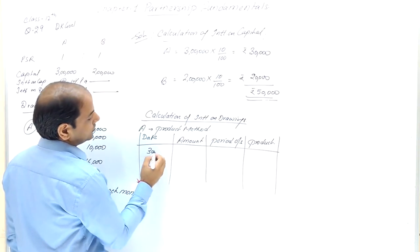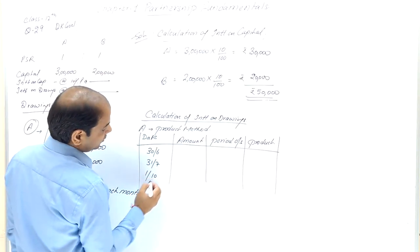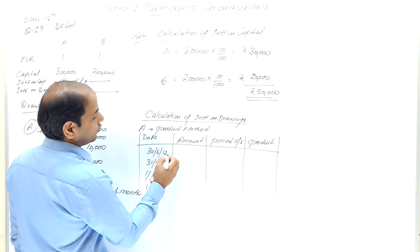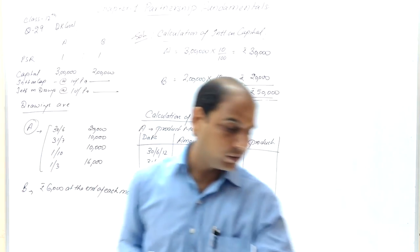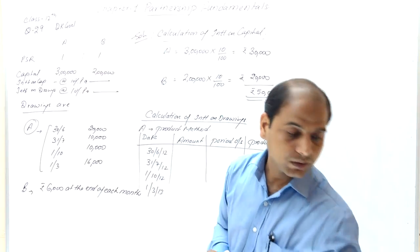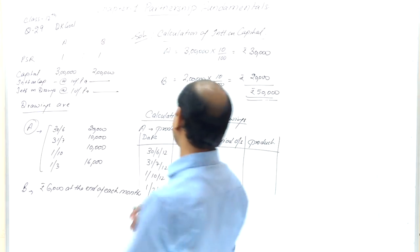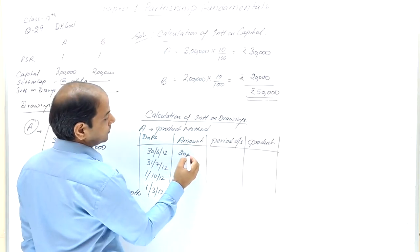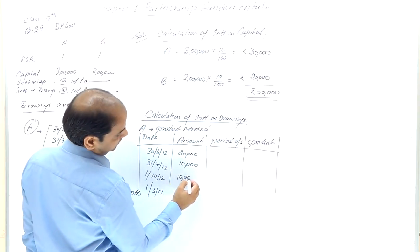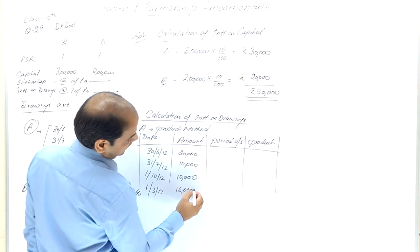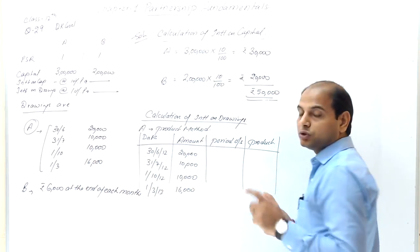A's drawings are: 30th June (2012) ₹20,000; 31st July ₹10,000; 1st October ₹10,000; and 1st March (2013) ₹16,000. The year ends on 31st March 2013. These are the amounts A withdrew during the year.